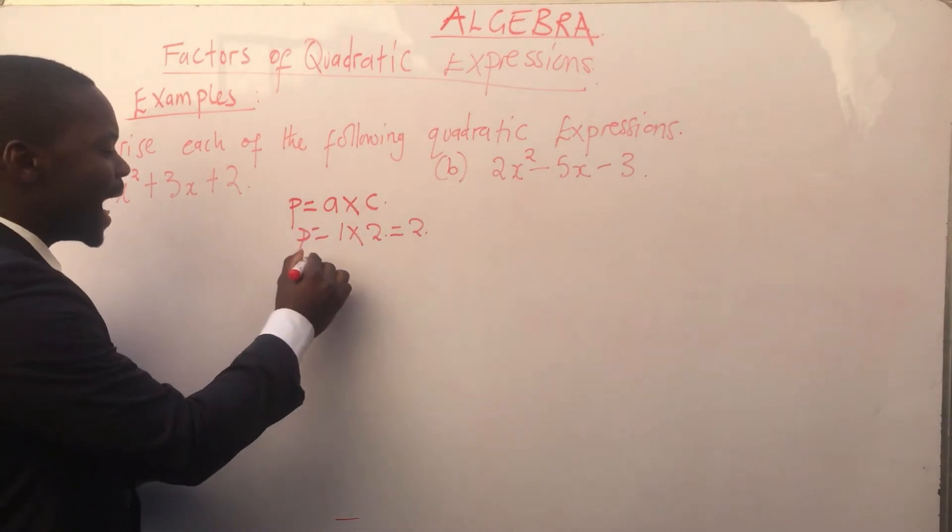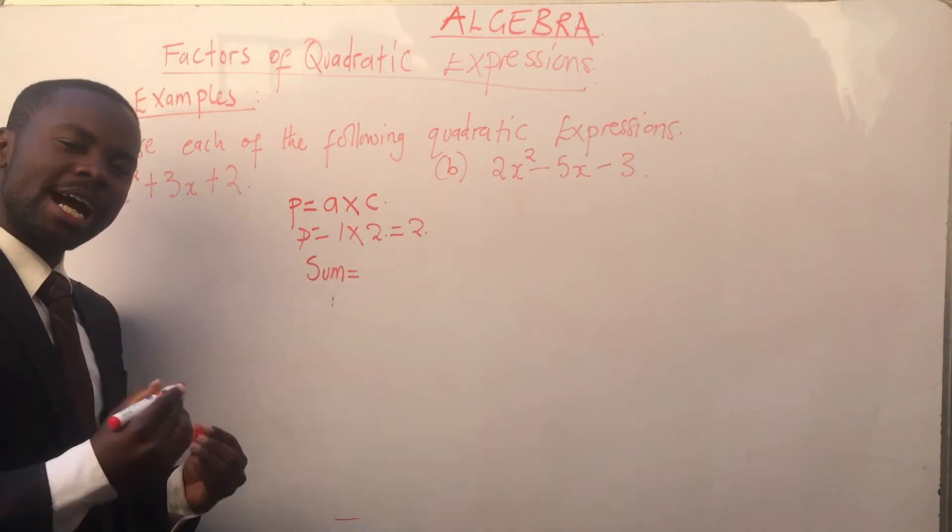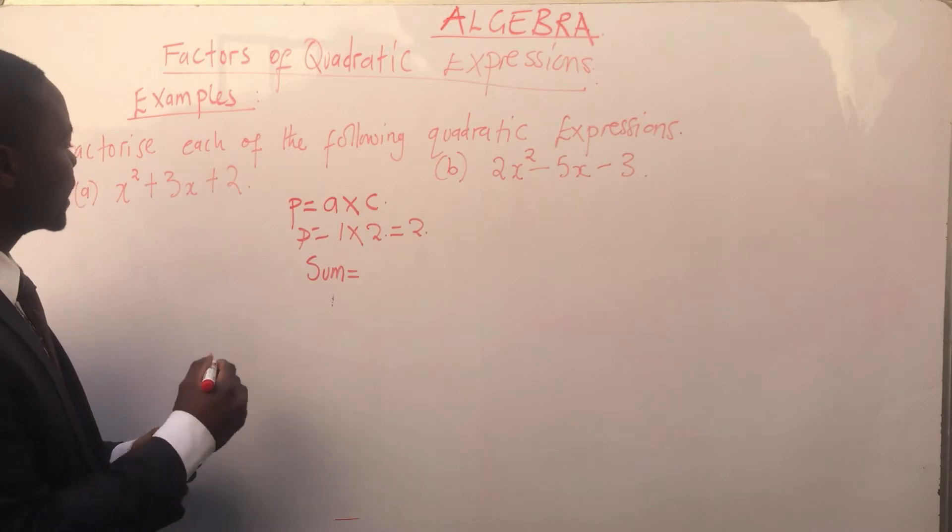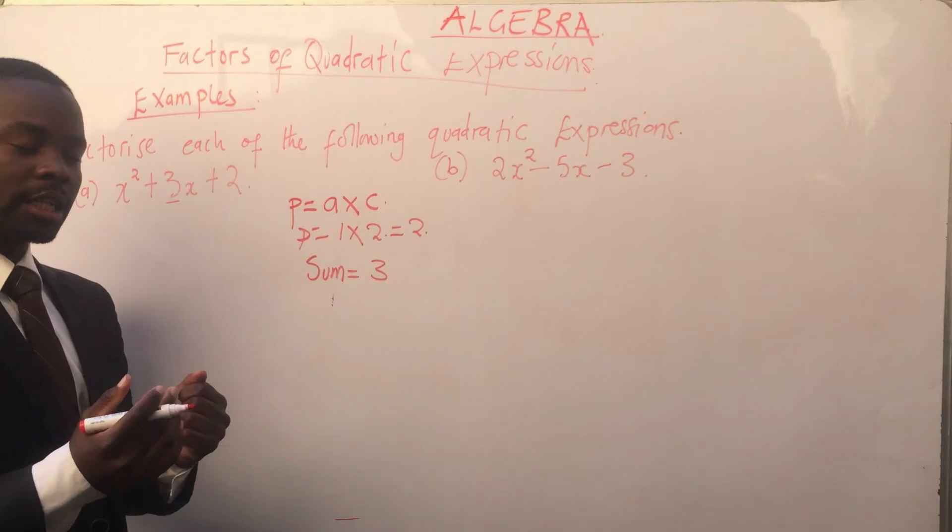Thereafter, let's identify our sum. Our sum, as discussed in the previous video, is just the coefficient of x. The coefficient of x is 3. So our sum, in short, is b.